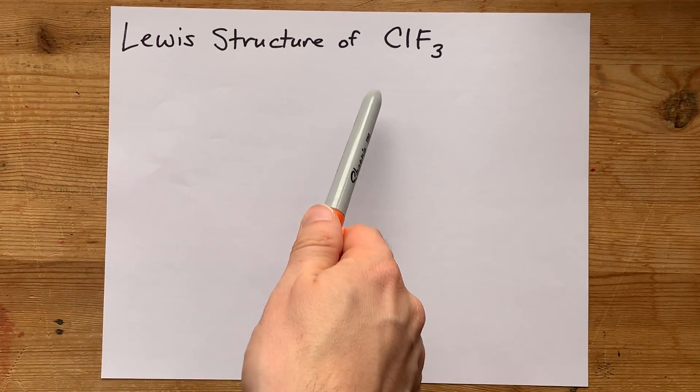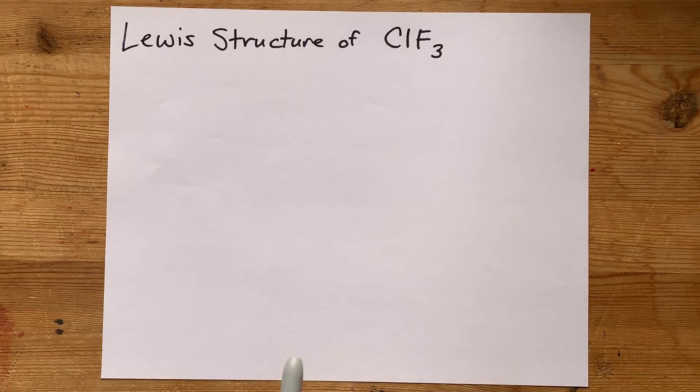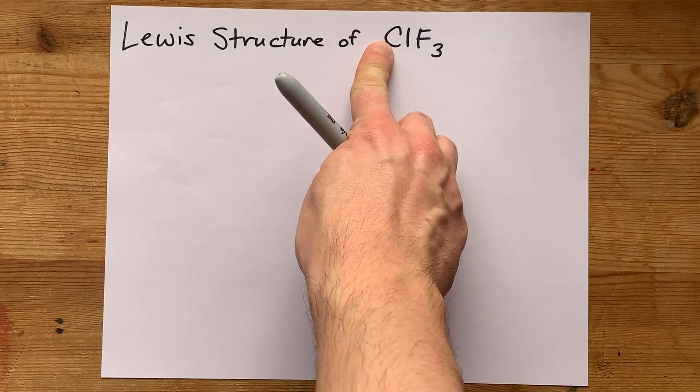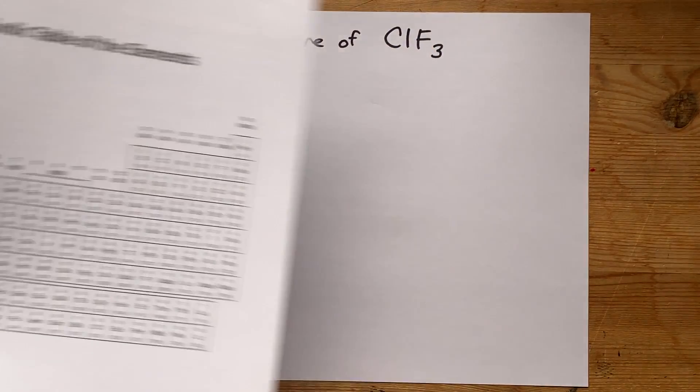We're going to draw the Lewis structure of ClF3, or chlorine trifluoride. I don't want you thinking this is a carbon and an iodine. This is a chlorine atom with three fluorines around it.